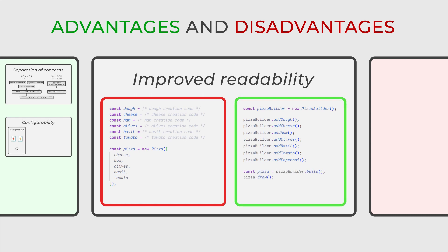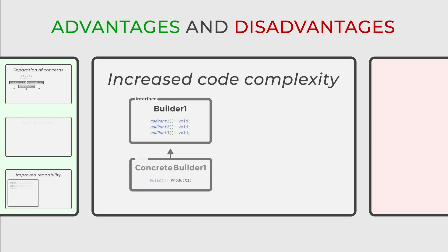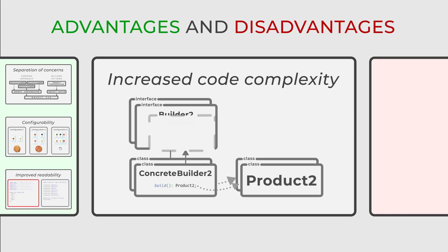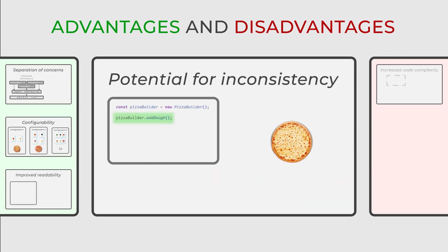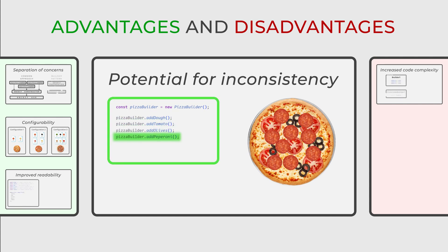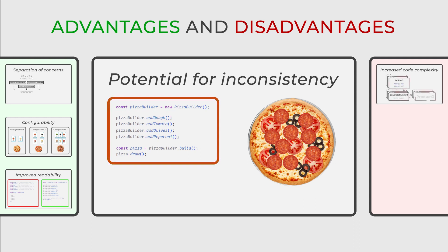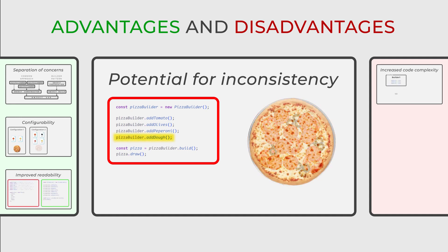This design pattern offers several advantages, but it also comes with some disadvantages that need to be considered. One significant drawback is the increased code complexity it introduces. This complexity arises from the creation of multiple classes and interfaces, which can make the overall codebase more intricate — especially problematic for smaller projects where the benefits might not be fully realized. Another potential disadvantage is the risk of inconsistency, as the pattern involves constructing an object step-by-step. If the builder is not used correctly, forgetting to set a required property or setting properties in the wrong order could result in objects in invalid or unexpected states.